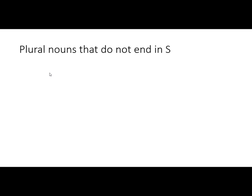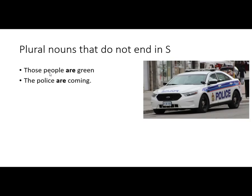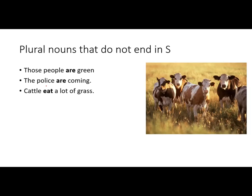Let's talk about some plural nouns that do not end in S — you might think they're singular, but they are plural. For example, 'people': 'Those people are green.' People doesn't end in S, but it is plural. 'The police are coming' — the police is plural. If you want to talk about one, you could say 'the policeman,' 'the policewoman,' or 'the police officer.' 'Cattle eat a lot of grass' — cattle means a group of cows, so that is plural even though it doesn't have an S. If I want to talk about one, I would say 'A cow eats a lot of grass.'